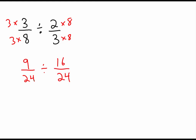And our fractions now become nine over 24 divided by 16 over 24. And in this example here, we have 24 divided by 24 is one. We can ignore it as a denominator of one. And then our numerators will be nine over 16.